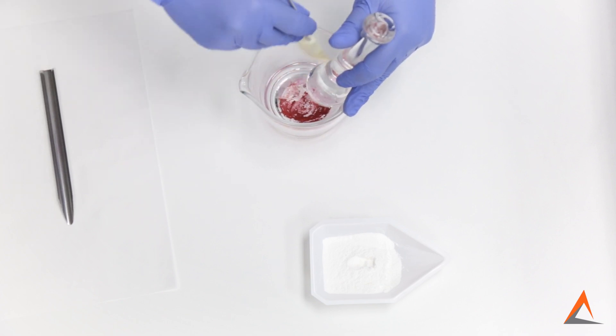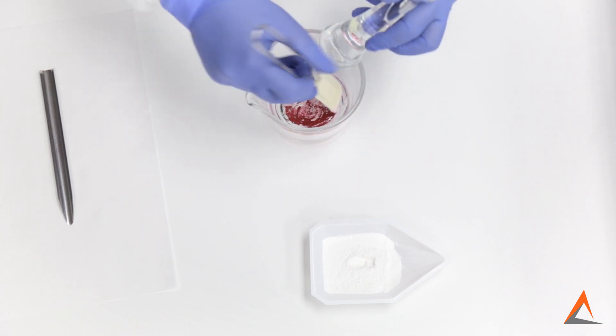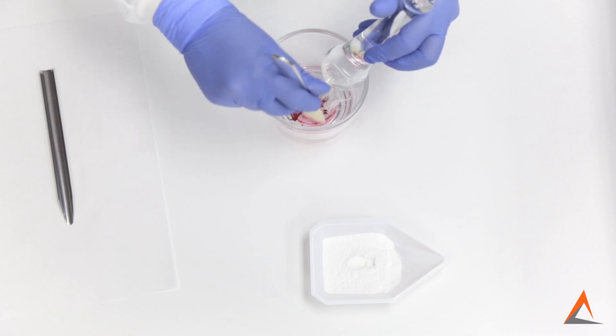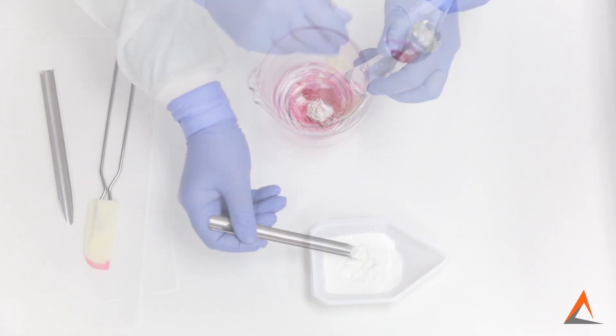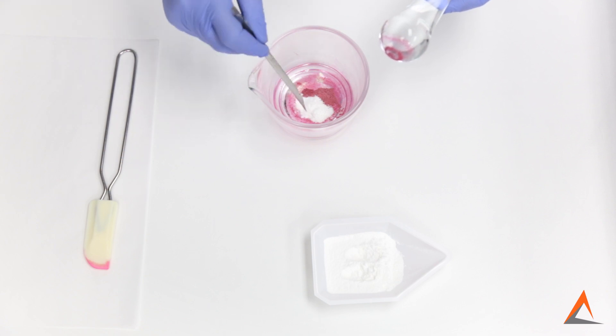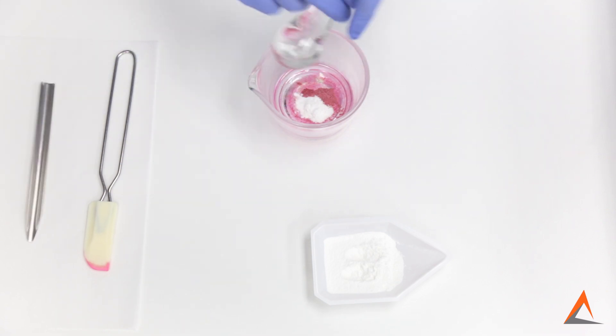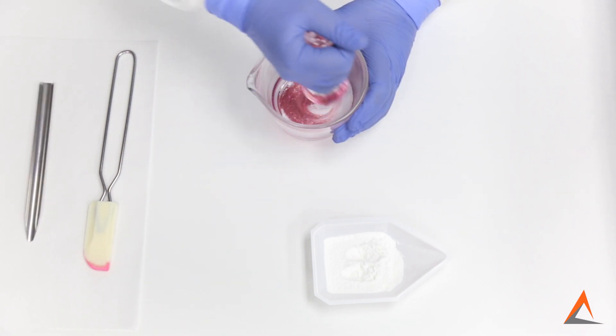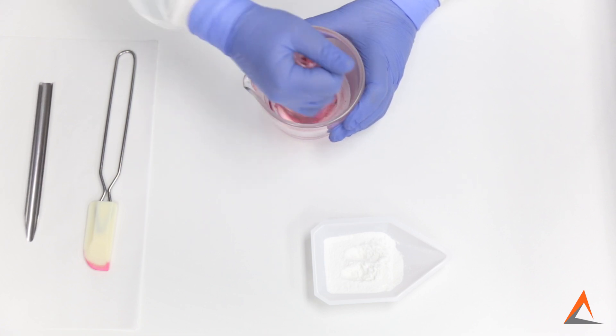After each mix, we're going to scrape down our pestle and the sides of our mortar and collect the powder in the center of our mortar. Then, we repeat the process by continuing to add an approximately equal quantity of the larger powder into our mortar, followed by mixing, until all the powder has been added.